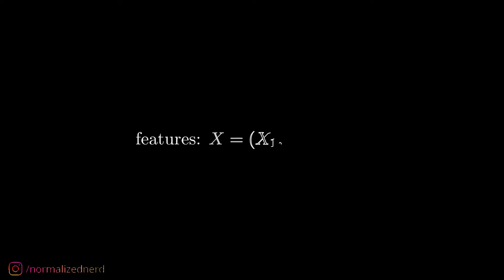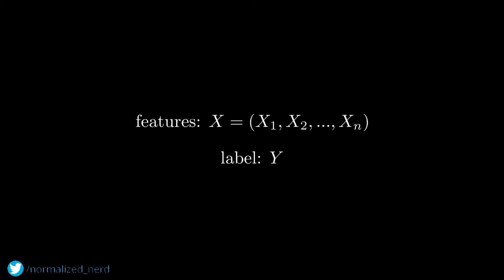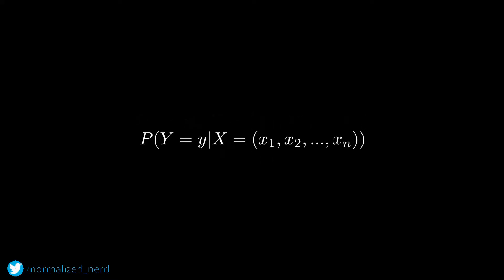First of all, let's define our classification problem. You will be given a set of features, denoted by x, which contains the elements x1, x2, up to xn — meaning we have n number of features. And given that, we need to find the correct label that is represented by y.